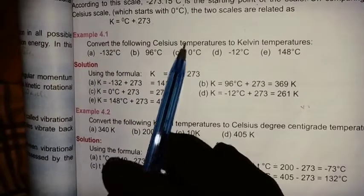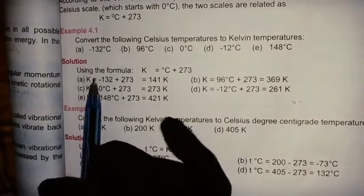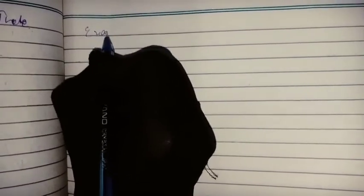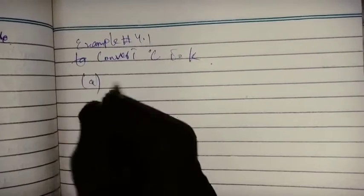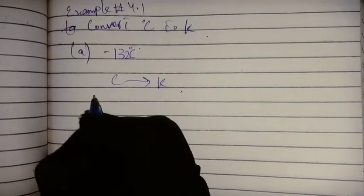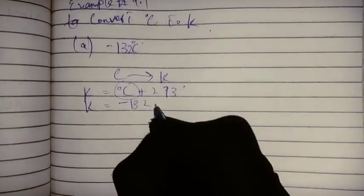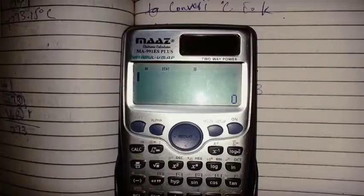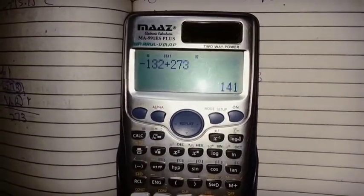Example 4.1: Convert the following Celsius temperatures to Kelvin temperature. First, minus 132°C: K = minus 132 + 273 = 141 Kelvin.